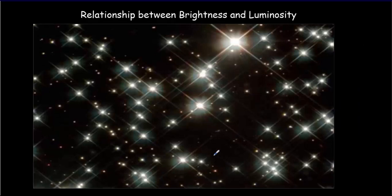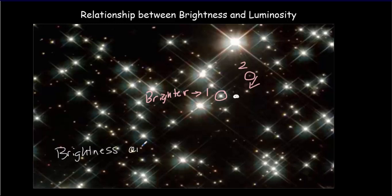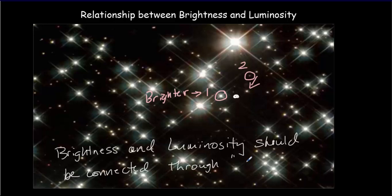Let's suppose I look up into the night sky and pick out a couple of stars - star 1 and star 2. You could definitely say that star 1 is brighter. But we couldn't say necessarily that star 1 is more luminous, because we don't know how far away this star is. If it's a really long ways away and we moved it up to be the same distance, we might find it's actually brighter. Ultimately, we know that brightness and luminosity should be connected through the concept of distance.